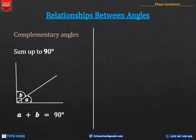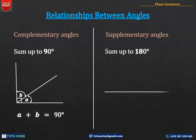The last set of angles we want to talk about in this lesson is supplementary angles. Two angles are said to be supplementary if they sum up to 180 degrees. For instance, in this diagram, angles A and B are supplementary. Therefore, A plus B is equal to 180 degrees.